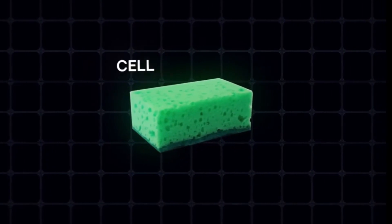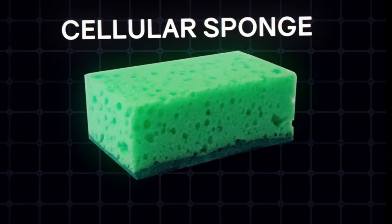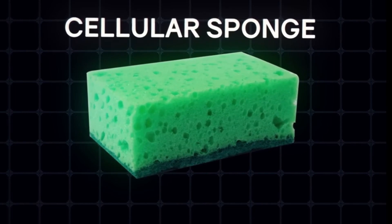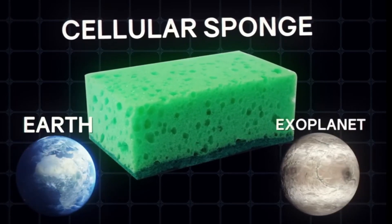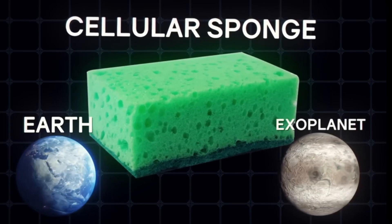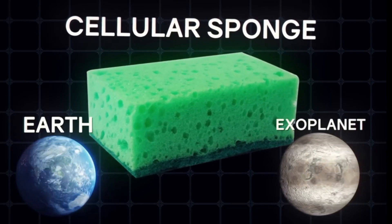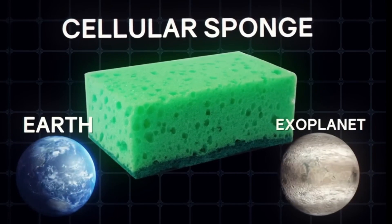The cosmos is like a cellular sponge, only an extremely large one. And it doesn't matter whether you're looking at this mega-sponge from Earth or from the most distant exoplanet ever discovered. The picture won't change much. The problem of finding the center of mass in a homogenous space is impossible.